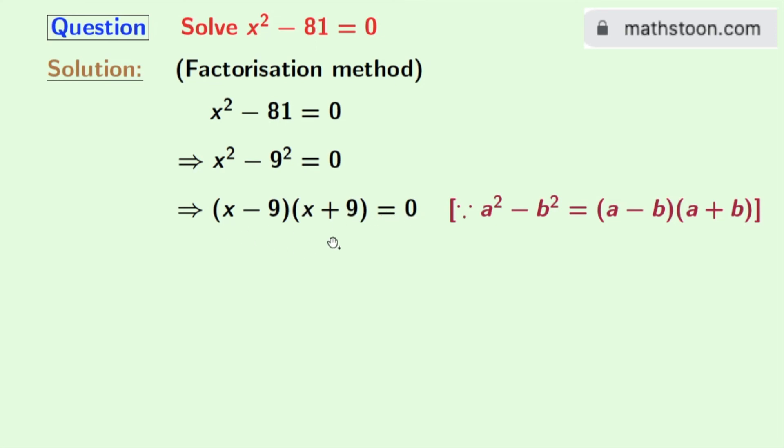We know that if the product of two numbers equals 0, then the value of either of those numbers will be 0. So either x minus 9 is 0 or x plus 9 is 0.